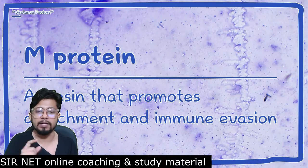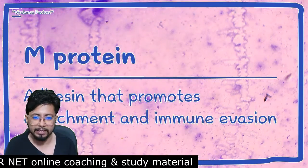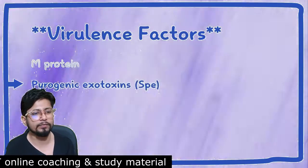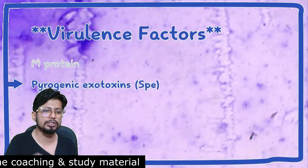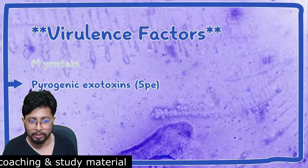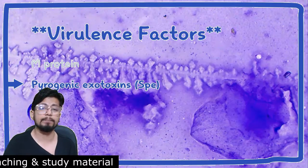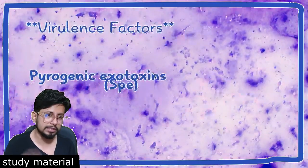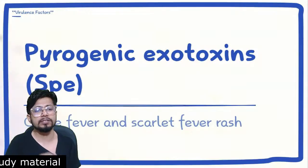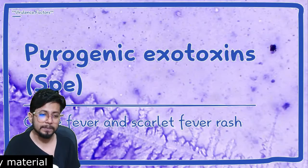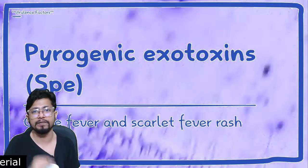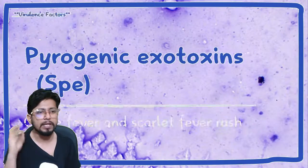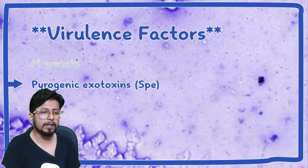The third important virulence factor is pyrogenic exotoxins, for example SPE (pyrogenic exotoxin). This exotoxin causes fever and the scarlet fever rash around the body.